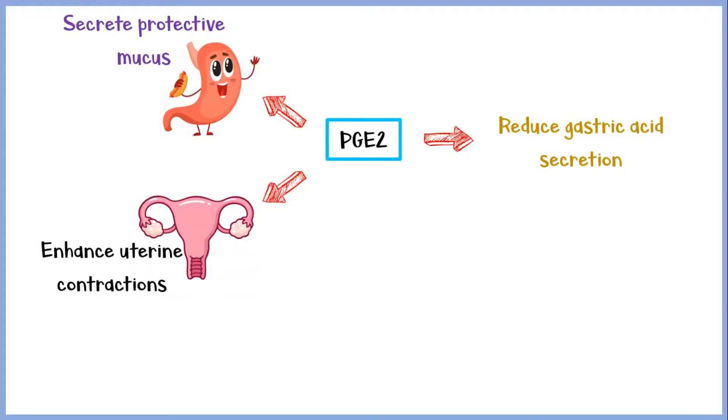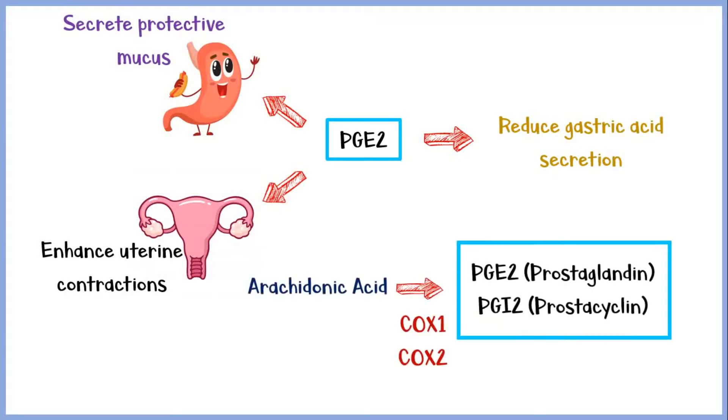What NSAIDs do is they inhibit either COX-1 or COX-2, or both, and reduce the secretion of prostaglandins and prostacyclins.